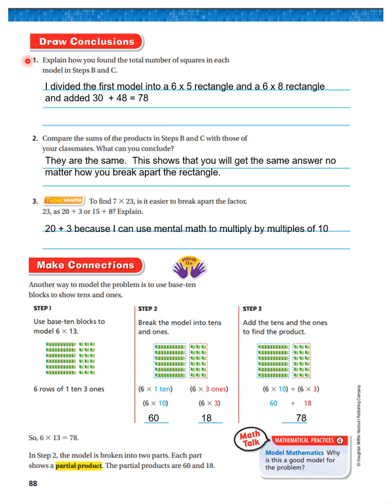It says explain how you found the total number of squares in each model. Well, I divided the first model into a 6 by 5 rectangle and a 6 by 8 rectangle and added 30 plus 48 to get 78. They're the same. This shows that you can get the same answer no matter how you break apart the rectangle to get 13.